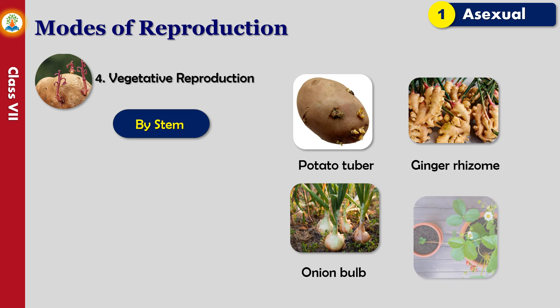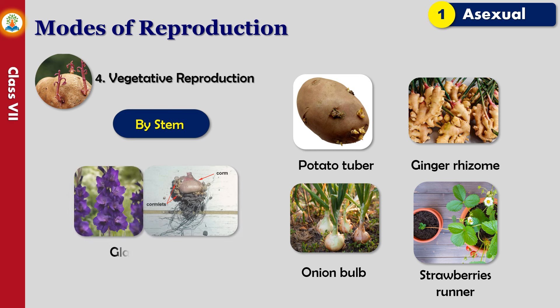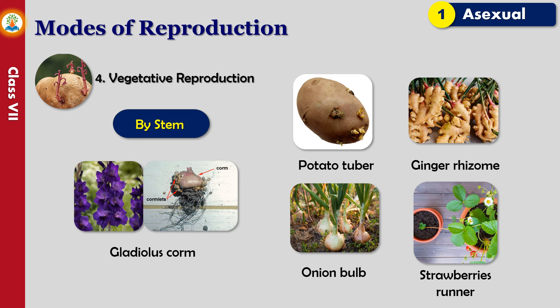Plants such as grasses and wild strawberries grow along the ground. In these plants, shoots develop from the sides which have buds, and these buds grow into new plants. These sideways-extending shoots are called runners. Plants such as Colocasia and gladiolus reproduce with the help of swollen stems called corms.